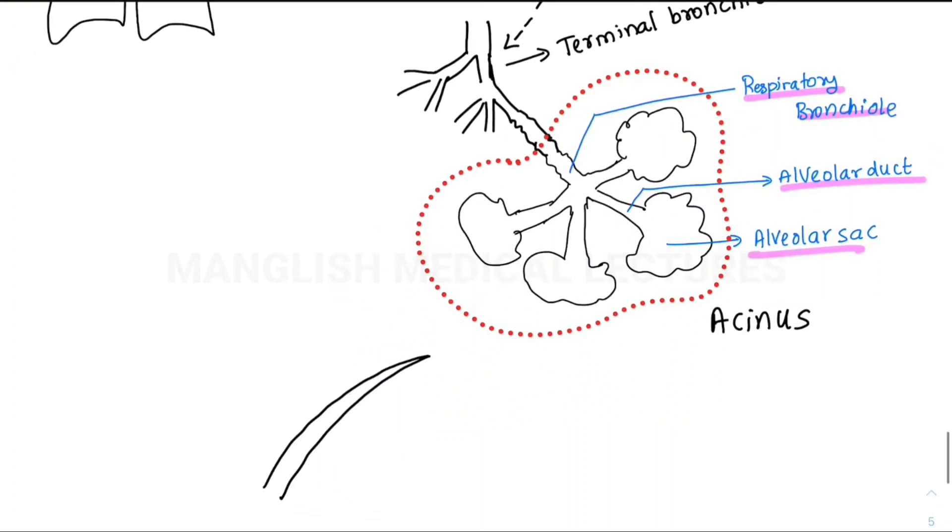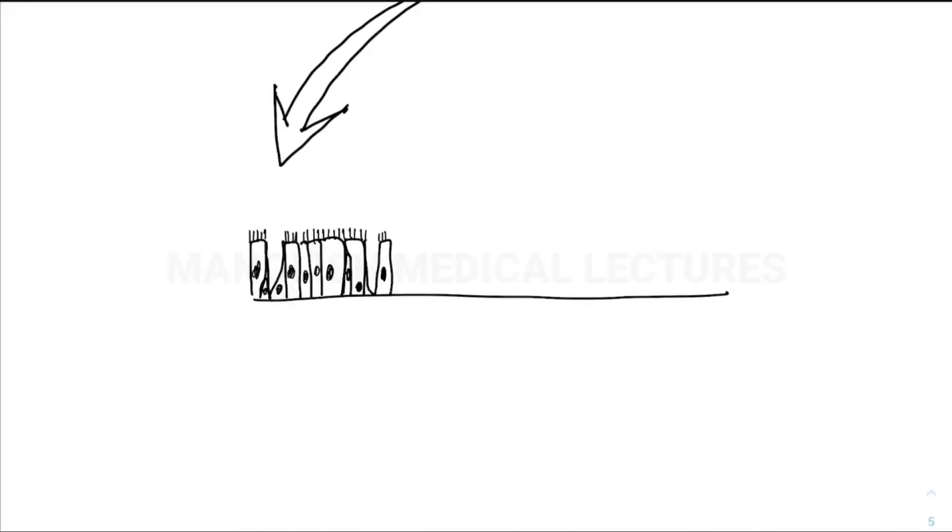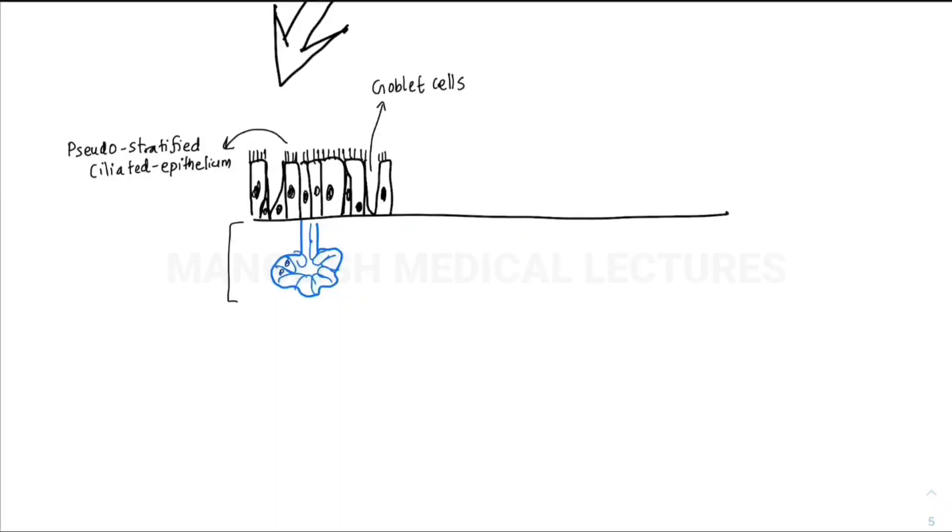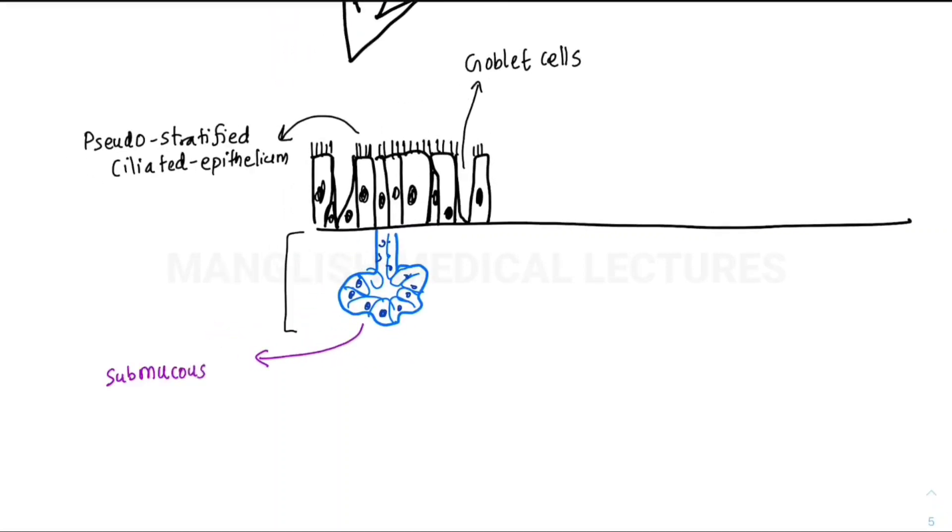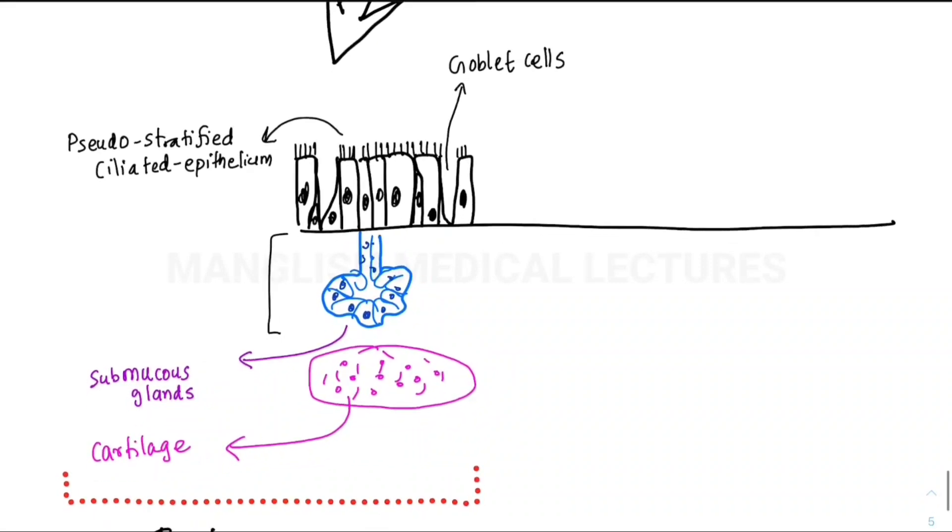Now we'll move to the histological transition. You can see the respiratory epithelium in the trachea—the ciliated pseudostratified columnar epithelium. We also find goblet cells in the respiratory epithelium inside trachea and bronchus. In the submucous layer, we have submucous glands and cartilage. This is trachea and bronchus.